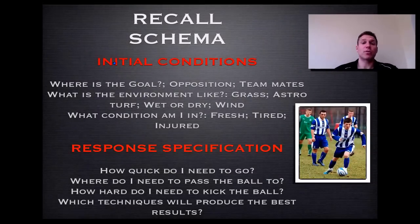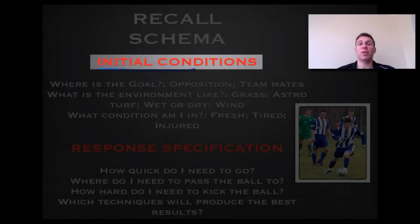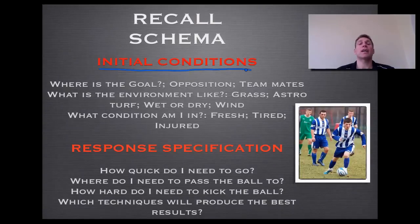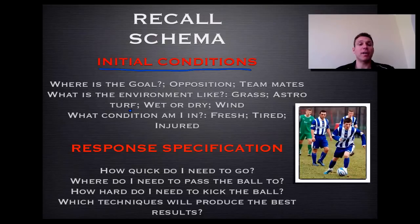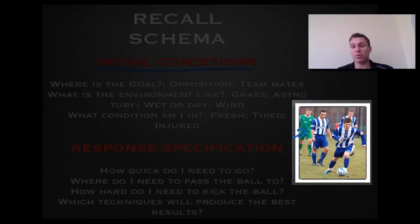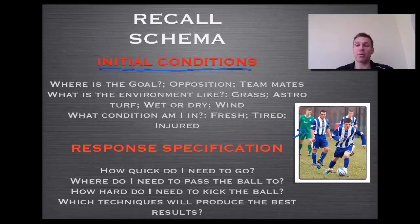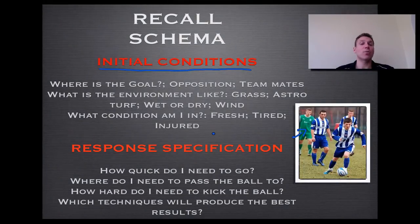The first part of Recall Schema, which happens before the movement, is initial conditions — what's going on as you're about to decide which motor program to use or adapt. Take a footballer on the ball: he considers where the goal is, where his opposition is, where his teammates are, how slippery or wet it is, and how he feels. This young man feels comfortable and not fatigued, so he sets off on a sprint toward goal. Those make up the initial conditions, applicable to any sport.